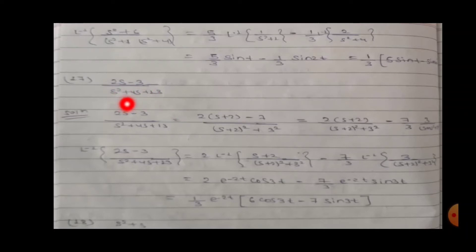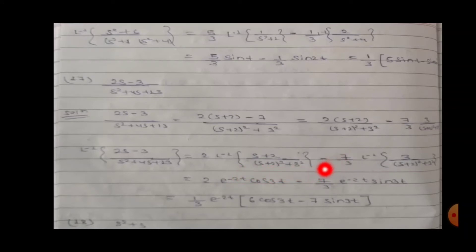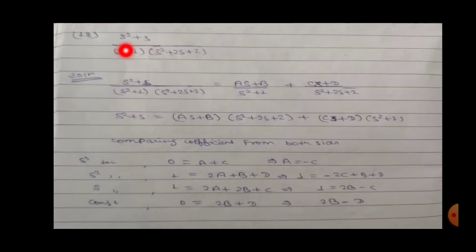Question 17: (2s-3)/(s²+4s+13). We rewrite 2s-3 as 2(s+2)-7. The denominator completes to (s+2)²+9. So the expression becomes 2(s+2)/[(s+2)²+9] minus 7/3 · 3/[(s+2)²+9]. Taking Laplace inverse: 2·e^(-2t)·cos(3t) minus 7/3·e^(-2t)·sin(3t).